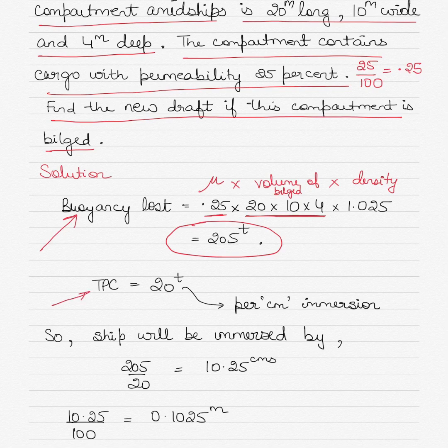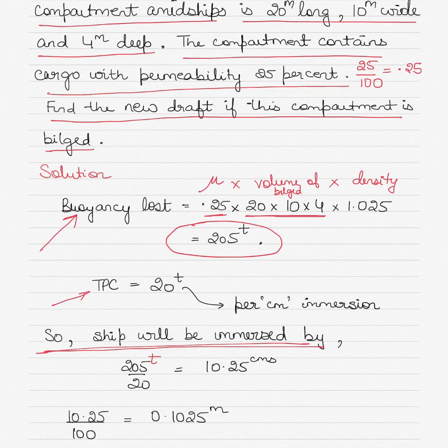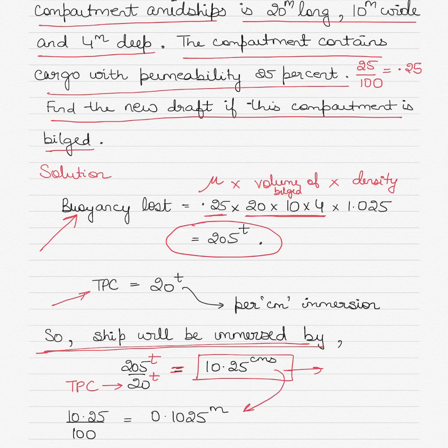For every 20 tons we have one centimeter immersion. So in this case, the ship will be immersed by 205 tons, which has entered the compartment with the permeability, divided by the TPC of 20 tons. That means for 205 tons loaded, the ship has now immersed by 10.25 centimeters. 205 divided by 20. But the draft is not given to us in centimeters, it is given to us as 6 meters. So we convert the centimeters into meters. One meter is equal to 100 centimeters, so therefore 10.25 centimeters will be equal to 10.25 divided by 100, which is equal to 0.1025 meters.